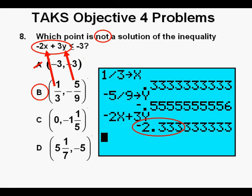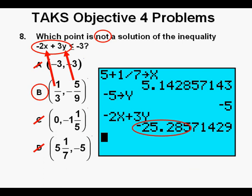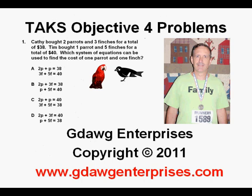However, to be certain we try out answer C in the same manner and it's negative 3.6 which is less than negative 3 which makes it a solution and therefore not a right answer. And we try answer D as well and since negative 25.3 is also less than negative 3, it is also a wrong answer so we cross it off as well.